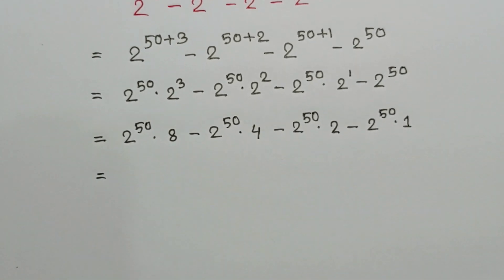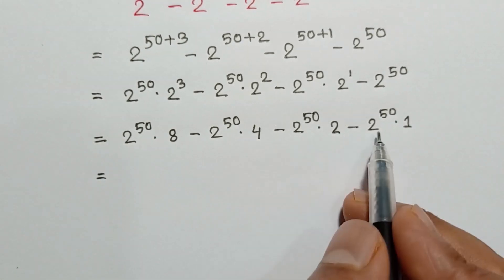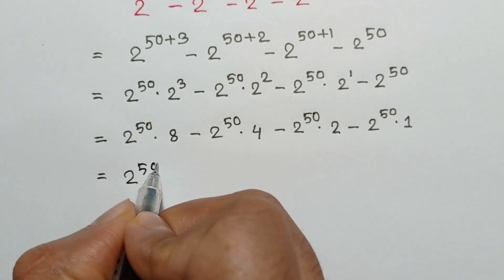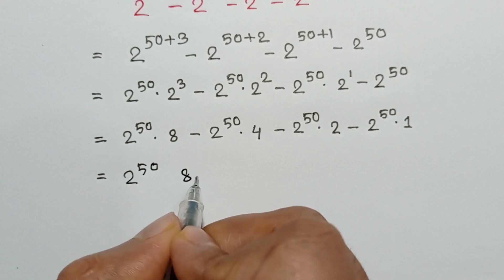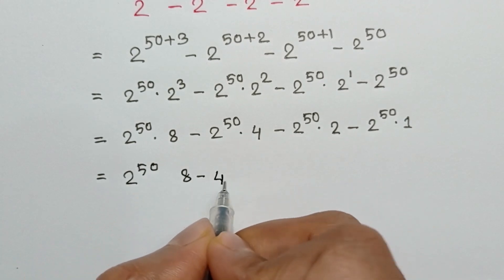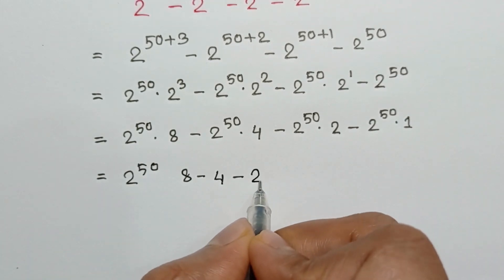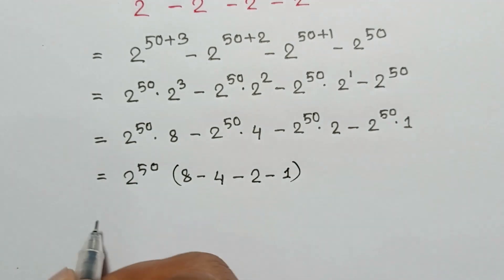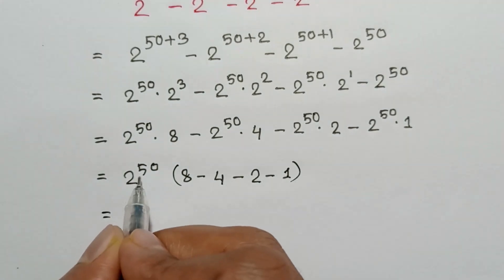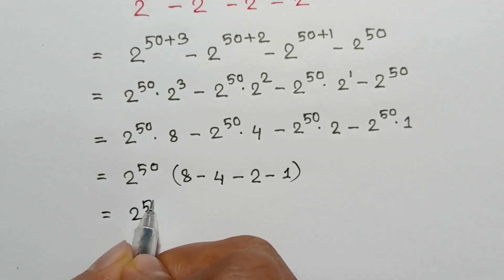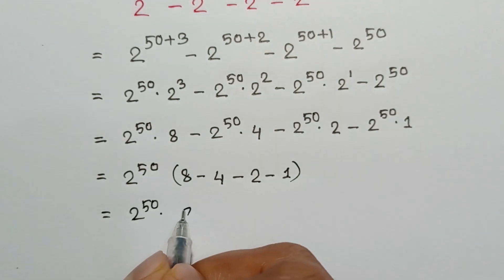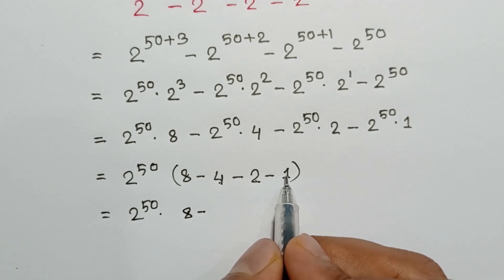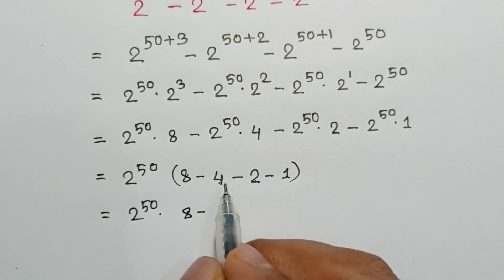Now, 2 to the power 50 is common. So taking out 2 to the power 50, we will have 8 minus 4 minus 2 minus 1, which equals 1. So 2 to the power 50 times 1.